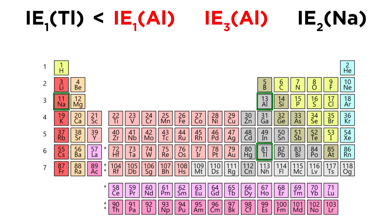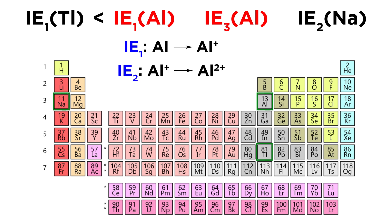Now let's look at the first ionization energy of aluminum versus the third ionization energy of aluminum. The first ionization energy takes aluminum to aluminum+; the second goes from aluminum+ to aluminum²+; and the third goes from aluminum²+ to aluminum³+. For any element, each successive ionization energy gets greater, because as an atom becomes more positively charged, it becomes increasingly difficult to remove negatively charged electrons. So IE1 for aluminum is less than IE3 for aluminum.